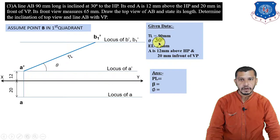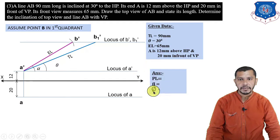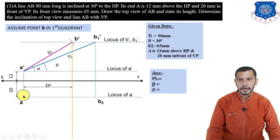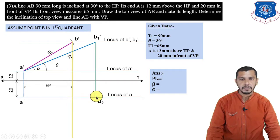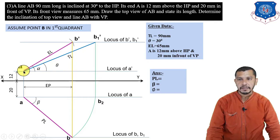Elevation length is 65mm and we now have the locus of B-dash. Take center at A-dash and give an arc of 65mm on the locus of B-dash to get B-dash. Connect B-dash to A-dash to get the elevation at angle alpha. Now draw the end projectors. From B1-dash, draw a straight line to the locus of A to get B2 — this indicates the plan length. We have the plan of A but not of B, so take center at A with radius A to B2 and give an arc on this projector to get B.